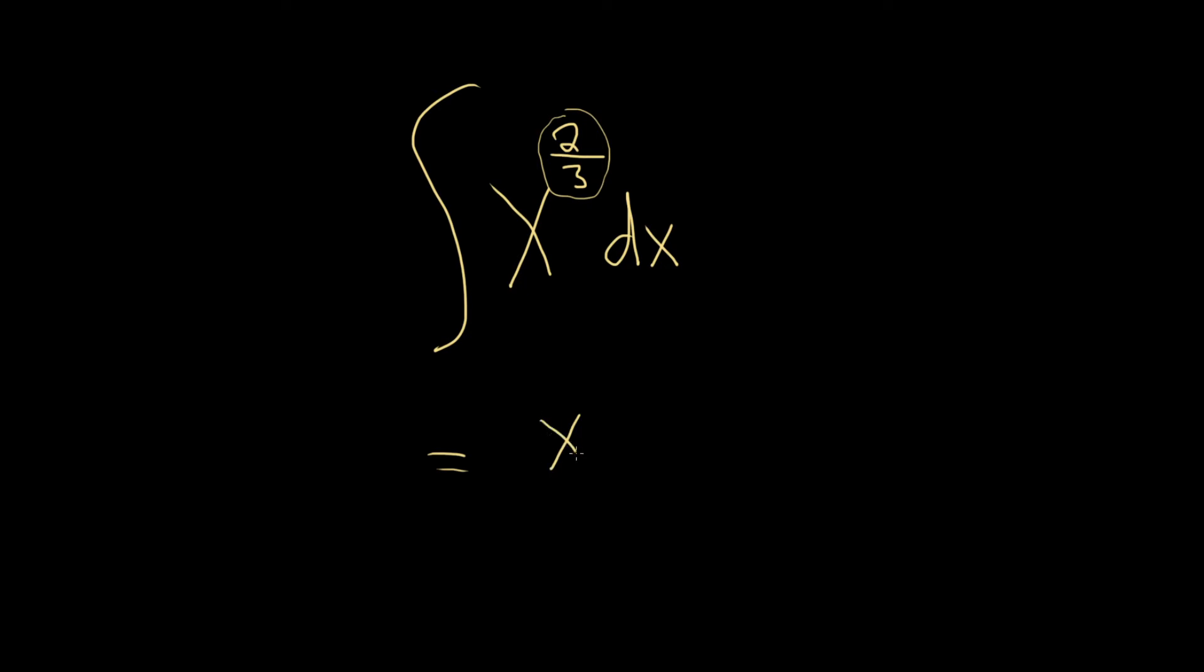We just write the x, and then we take 2 thirds, and then we add 1.